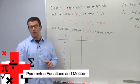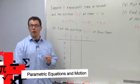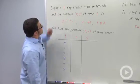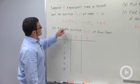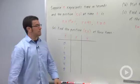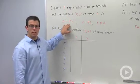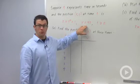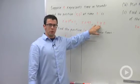One of the neat applications of parametric equations is using them to model motion. Suppose t represents time in seconds, and the position xy at time t is given by the equations x equals t squared plus 1, y equals 4t, for t greater than or equal to 0.